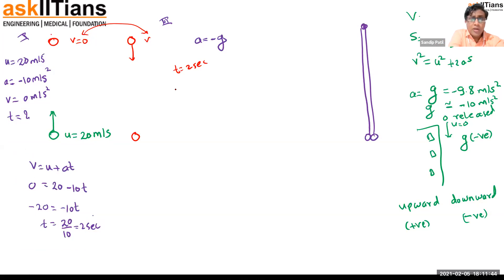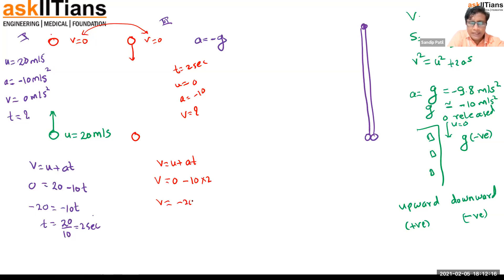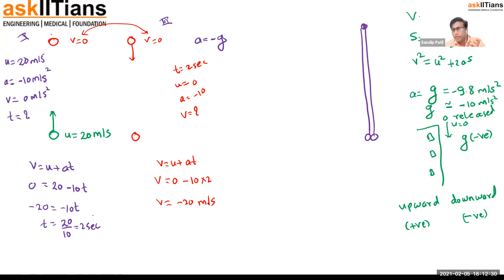For Part 2 (coming down), u = 0 at the top, a = −10, t = 2 seconds. Using v = u + at: v = 0 + (−10)(2) = −20 m/s. The negative sign means the velocity is downward. The magnitude of the return velocity equals the initial throwing velocity.